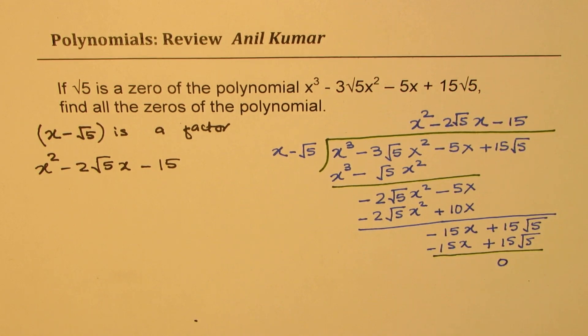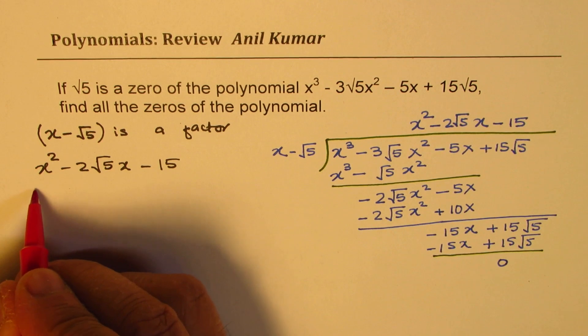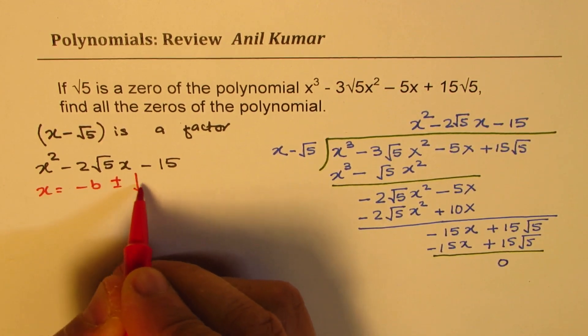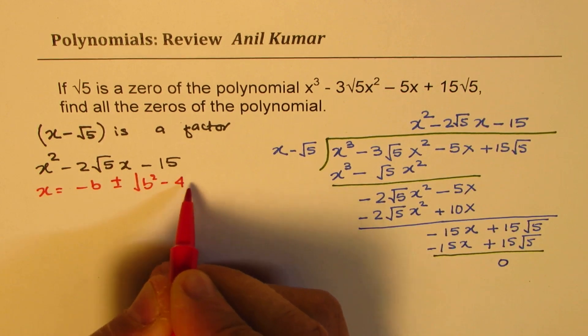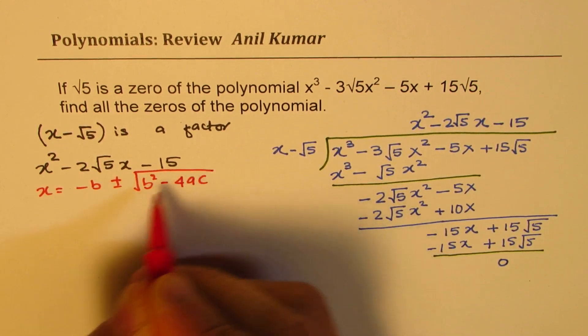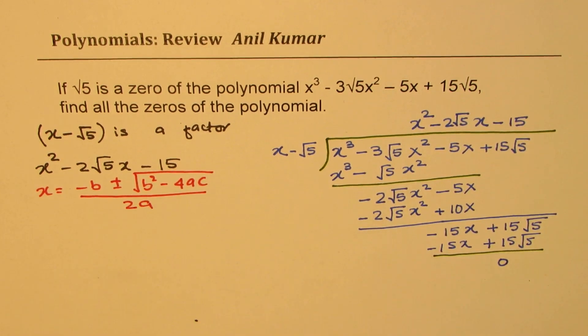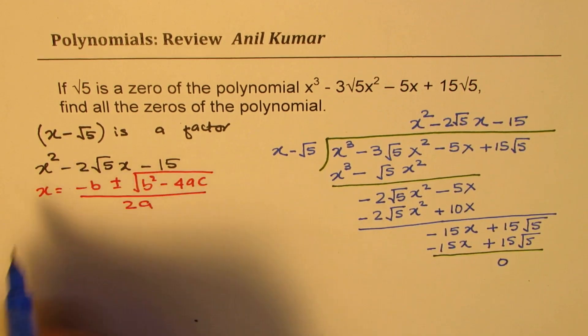So we could now use the quadratic formula, which is x equals minus b plus minus square root of b squared minus 4ac divided by 2a. Using this formula, we can get our result.